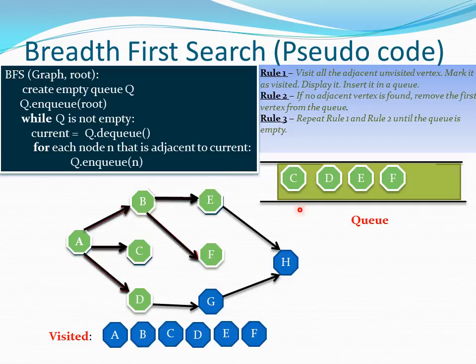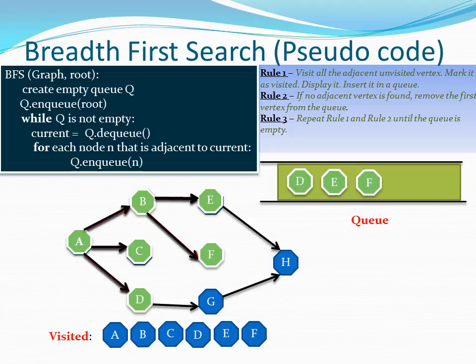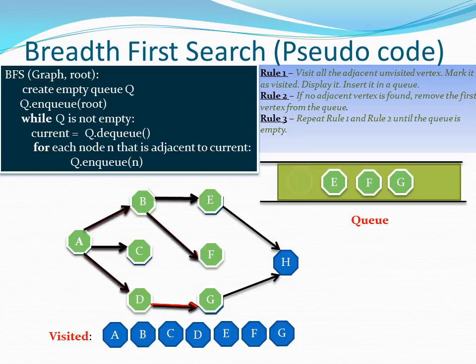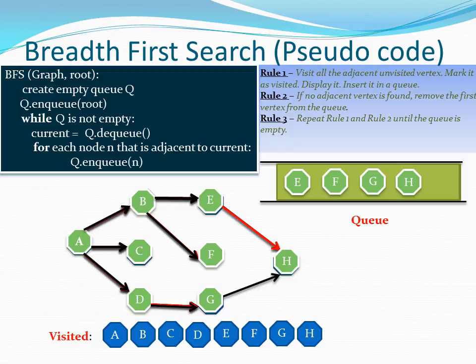We start the next node C. We dequeue C and process it as we did in the previous animation. Next in our queue is D. Current now represents D. For each node N adjacent to D — D has one unvisited vertex — we enqueue it into the queue. We are done with D, so we remove D from the queue. We look at the next node E; E has one adjacent vertex, so we enqueue it.